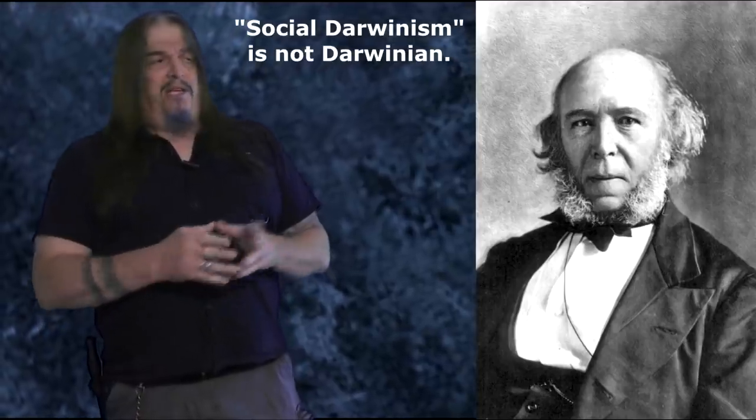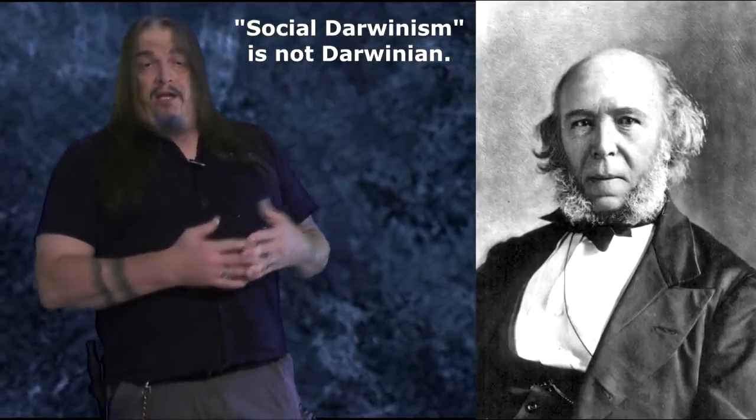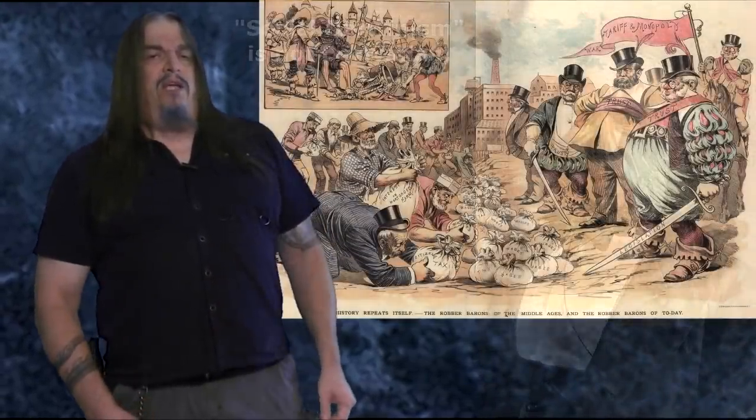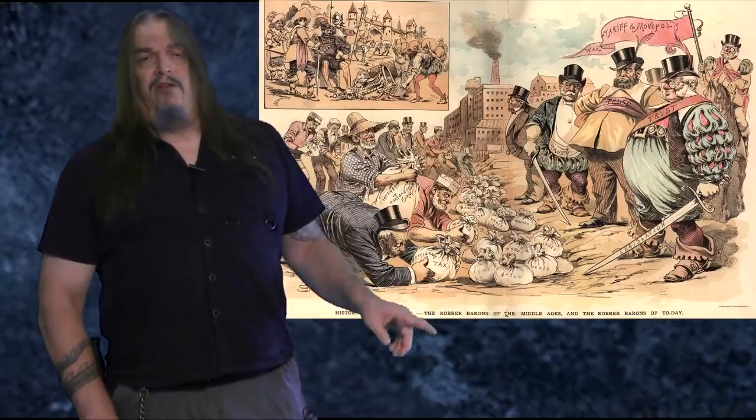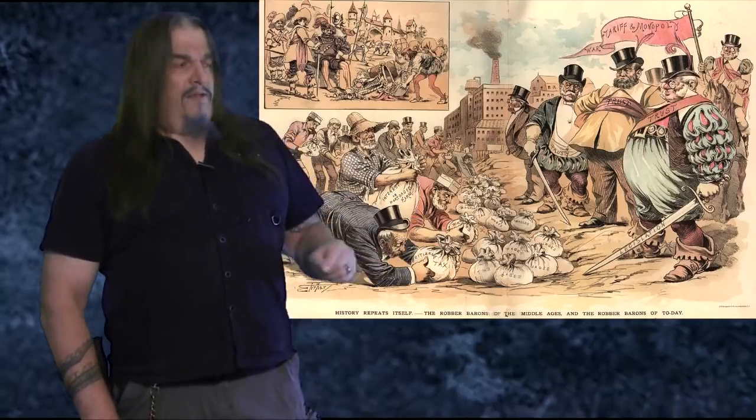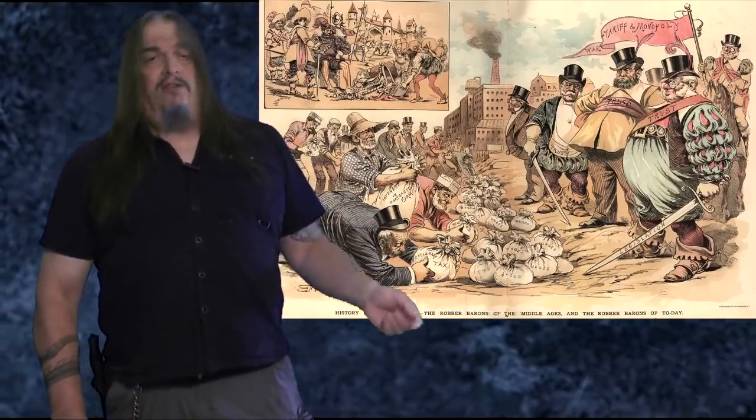Darwin concluded that when the principle of evolution is generally accepted, as surely will be before long, the dispute between monogenists and polygenists will die a silent and unobserved death. Haeckel rejected natural selection as a biological mechanism, but he bought into a perversion of it promoted by another Lamarckian — an economist named Herbert Spencer. Spencer is the one who came up with the phrase survival of the fittest in a socio-political concept he called social Darwinism, applying that to ethics by identifying the rich as the strong and the poor as the weak. Darwin could have sued Spencer for tarnishing his name and misrepresenting his theory with notions Darwin himself did not agree with.